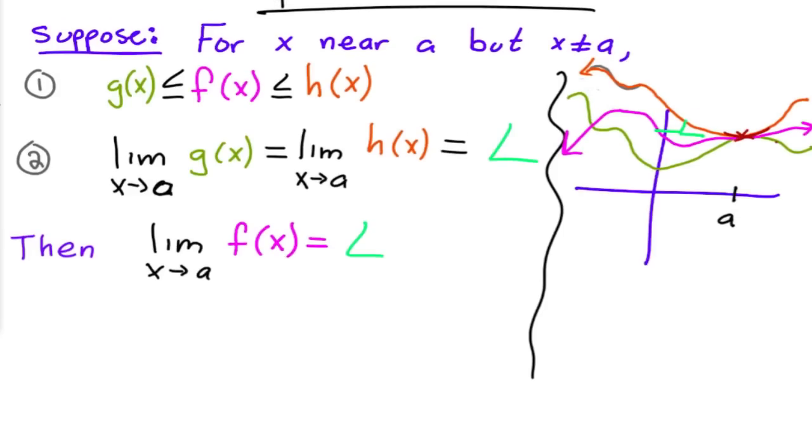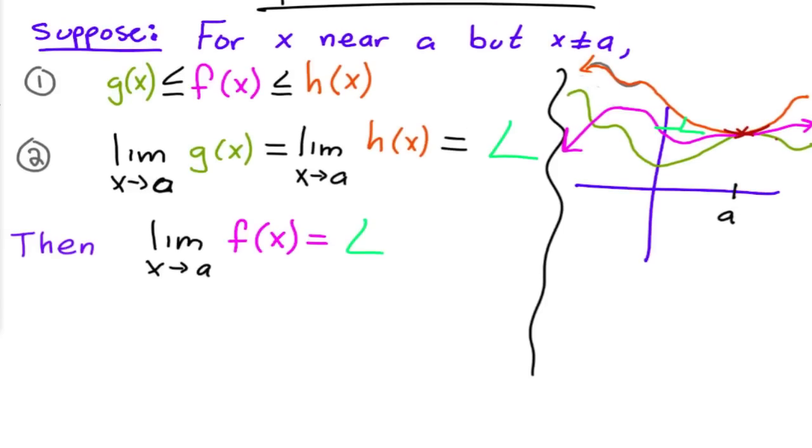Let me just, okay, I've got an example. Let's say we're trying to find the limit as x approaches 0 of x times cosine of 1 over x.